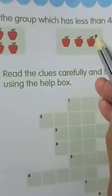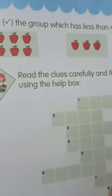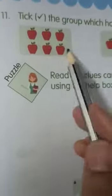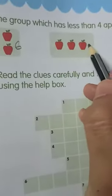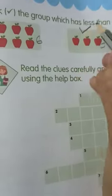The next question is, tick the group which has less than 4 apples. Here, we have 1, 2, 3, 4, 5, 6. 6 apples we have. Here, 1, 2, 3. So, 3 is less than 4. Tick this.